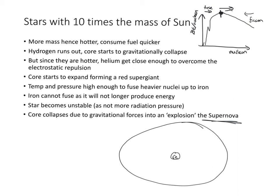Elements heavier than iron cannot be produced by fusion in stars. However, in the supernova, elements heavier than iron can be formed from the remaining heavy nuclei where they fuse together using the extra energy released. We are all made of star dust — we are all made of elements that have been formed in a star and in the death of a star. So once fusion finally ceases up to iron, the star becomes so unstable it collapses and explodes into a supernova.